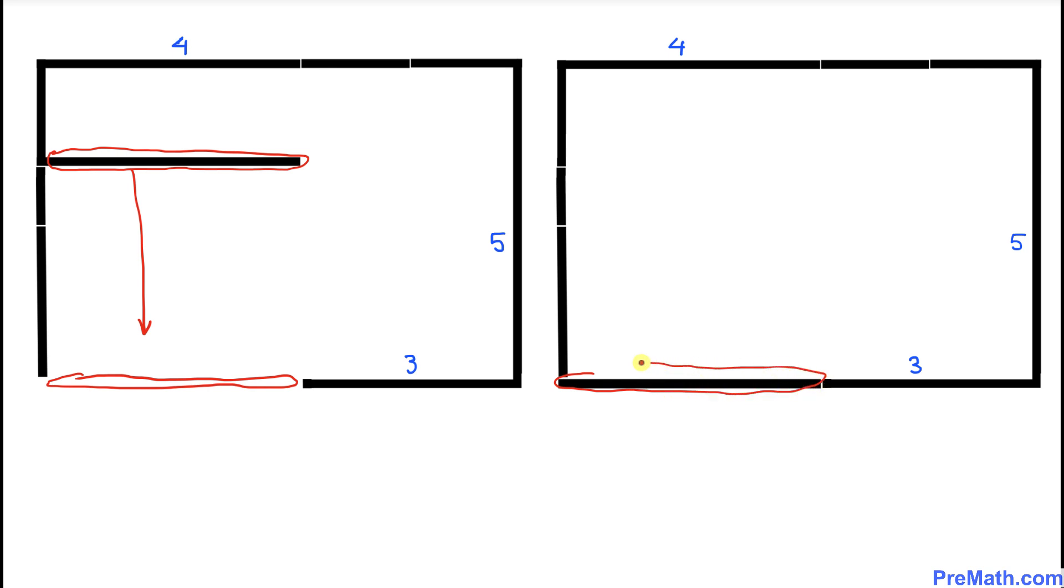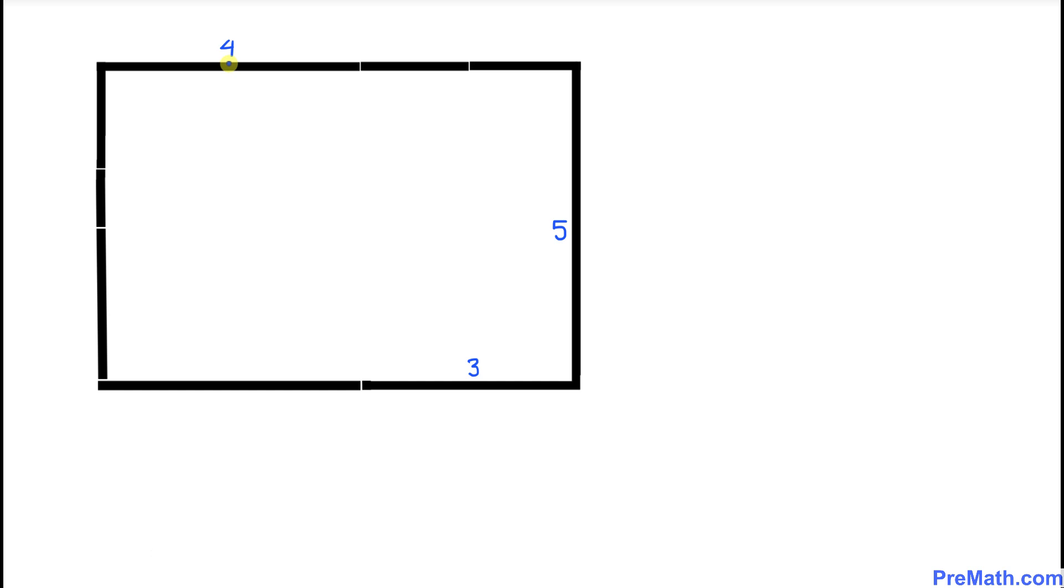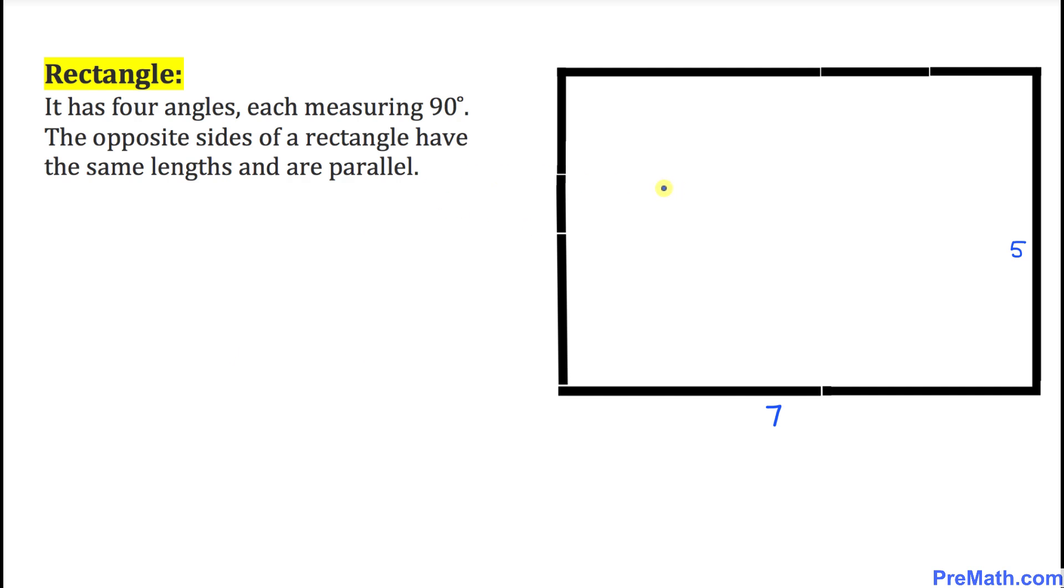All right. And as we can see that this segment is 4 units, and this has got to be 4 units as well. So the length of this total side is going to be 4 plus 3 equal to 7 units. And as we can see, this shape is a rectangle.